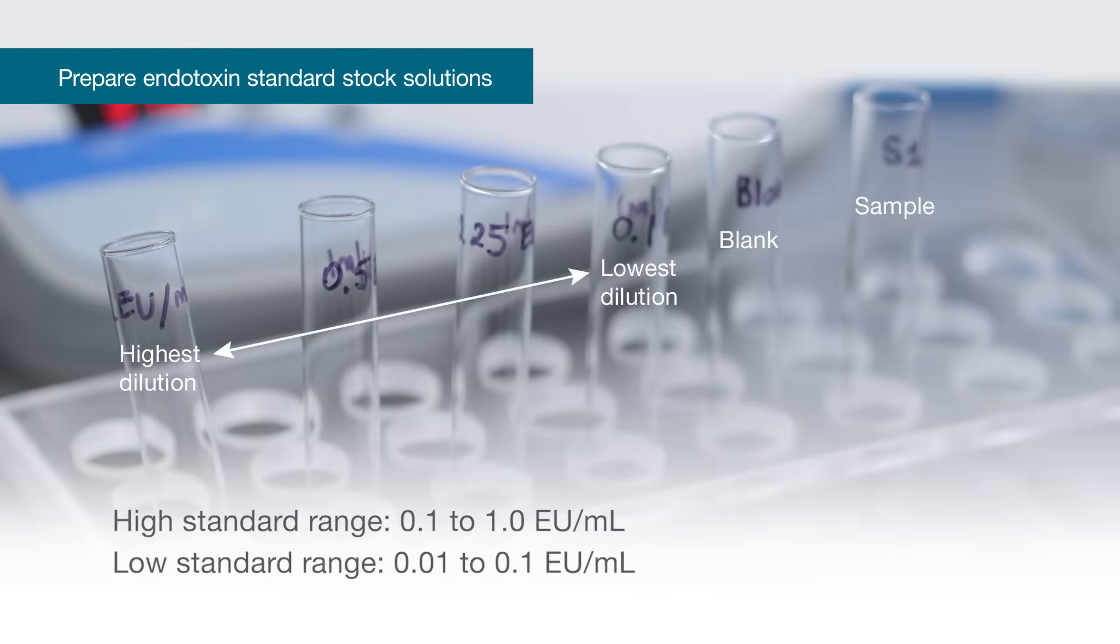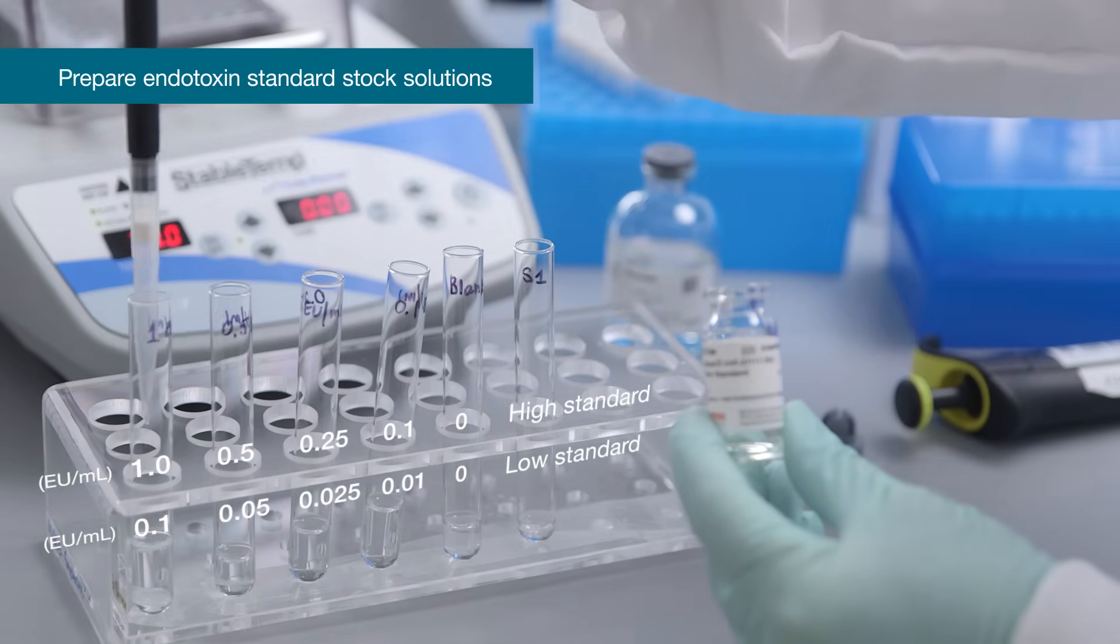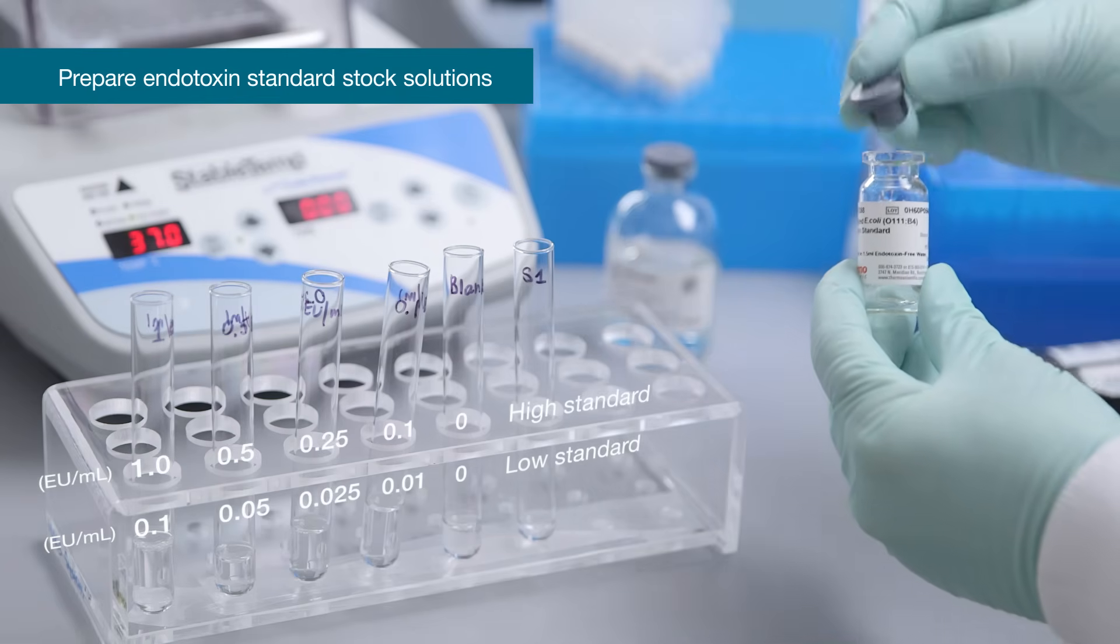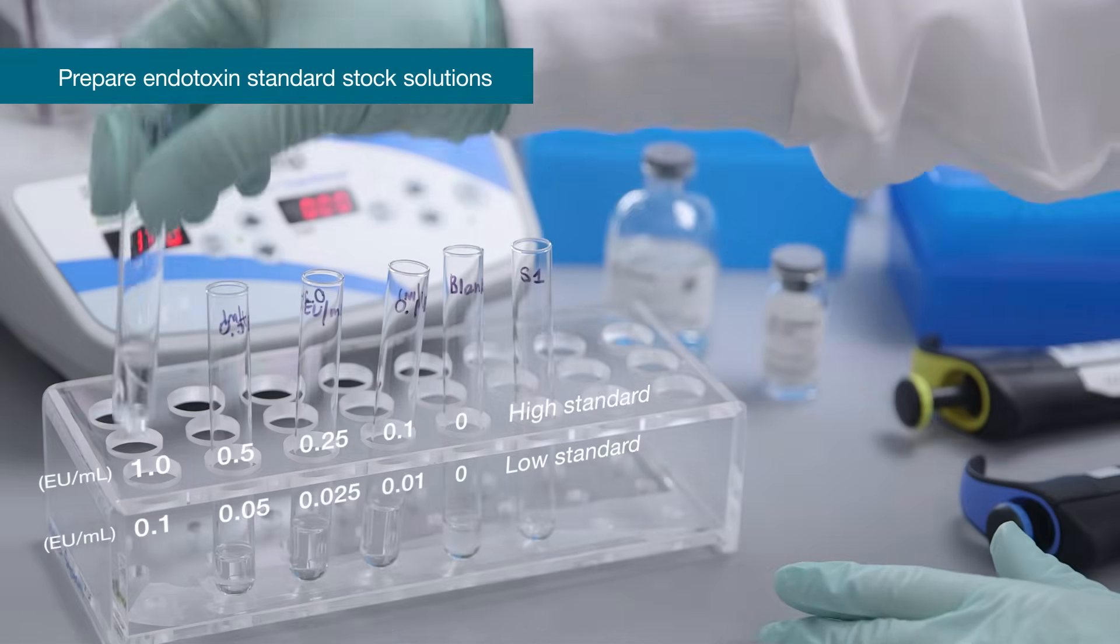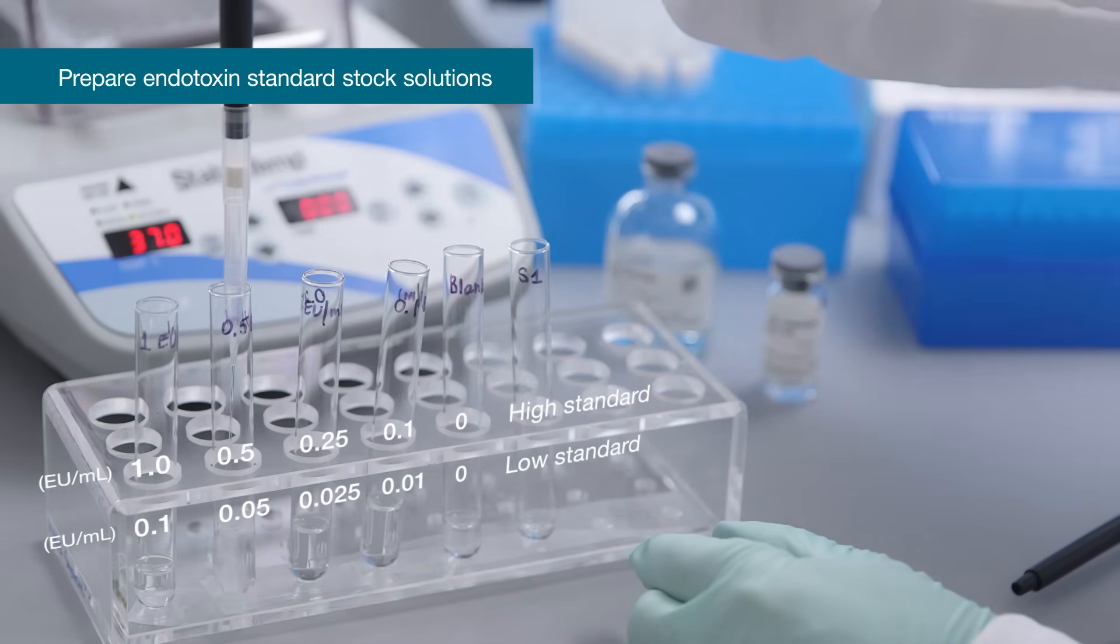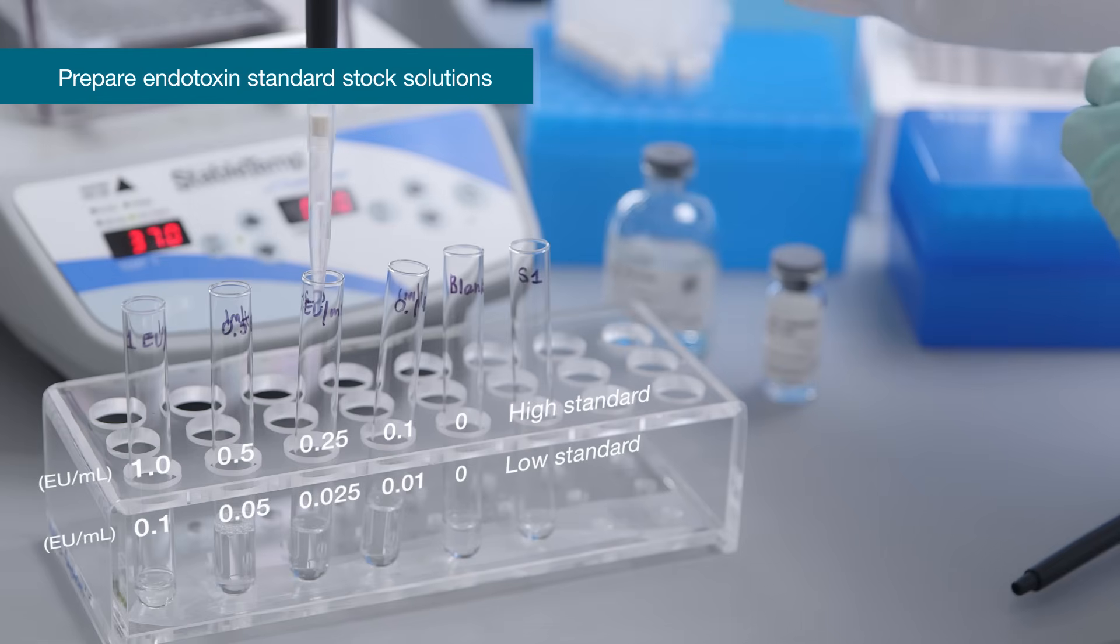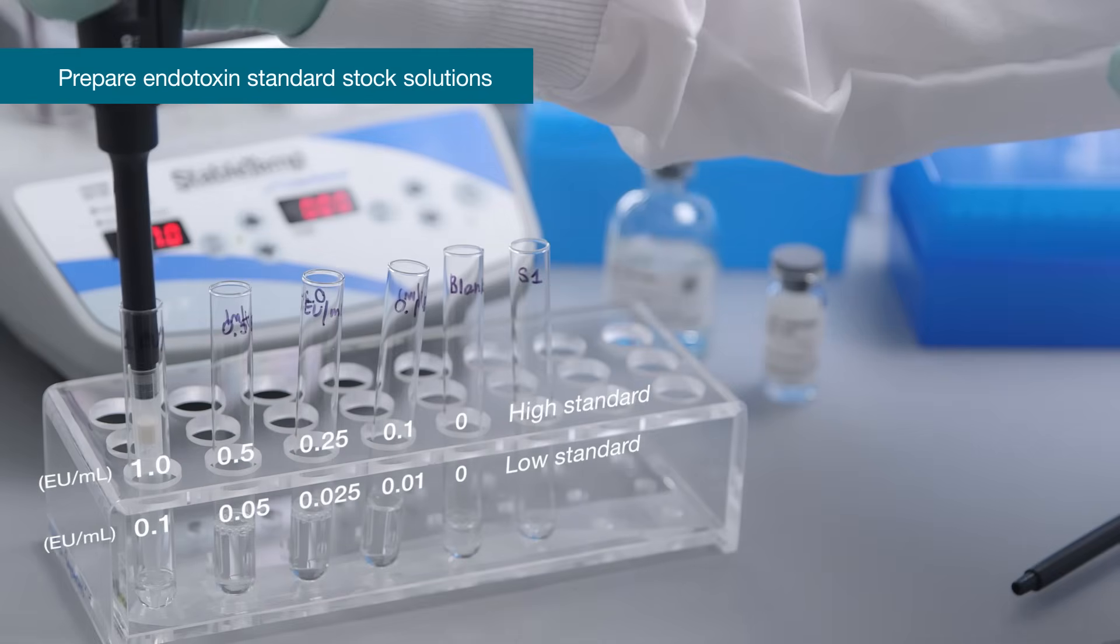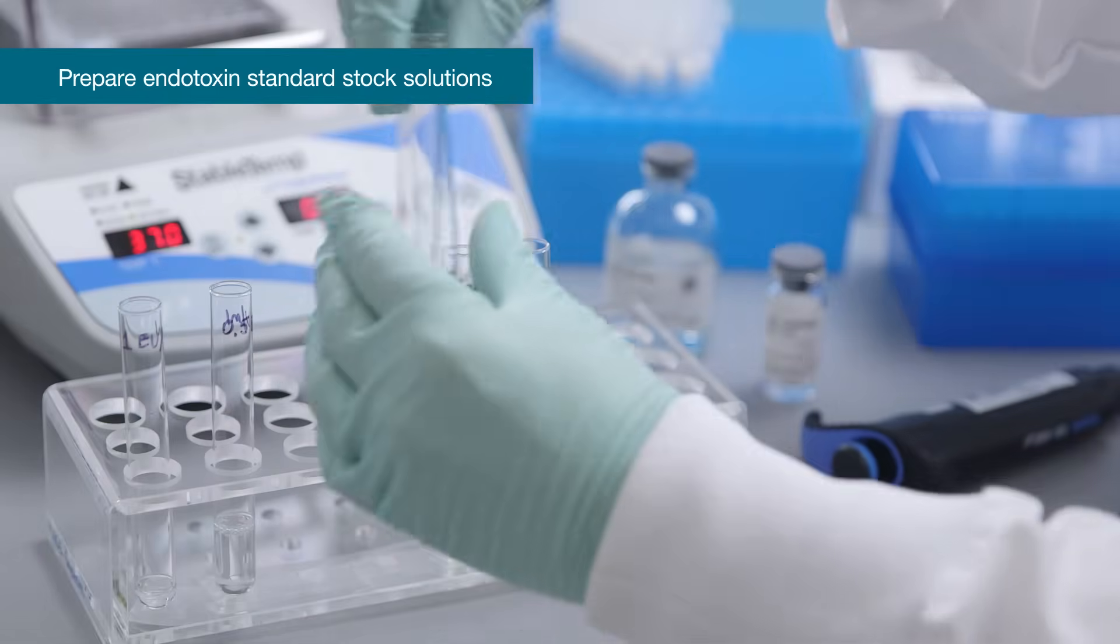Prepare dilutions for high standard or low standard range using endotoxin standard solution of 10 endotoxin units per milliliter. Make first highest standard dilution, vortex two minutes. Vortex the solution, pipette from first dilution to make all other subsequent dilutions. Vortex all three tubes together one minute.